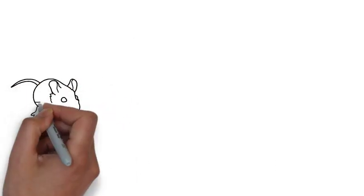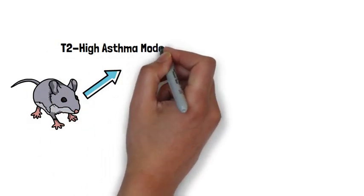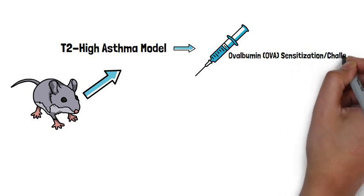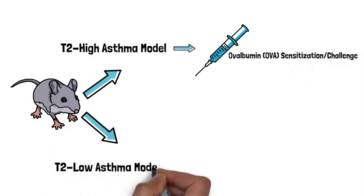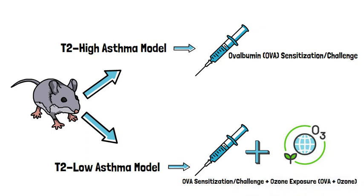The researchers created two asthma models in mice: a T2-high asthma model created by ovalbumin (OVA) sensitization and challenge, and a T2-low asthma model created by OVA sensitization and challenge combined with ozone exposure.